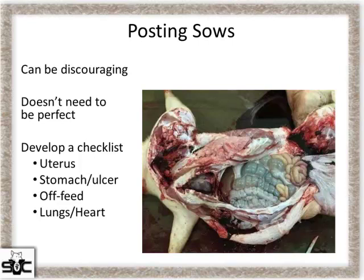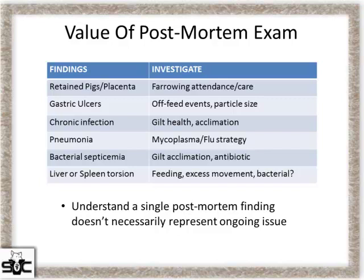Commonly, check the uterus for retained pigs or infection, check for an ulcer if the sow has been off feed, and do a heart and lung check — is there pneumonia or bacterial infection? That's the cause of death. I think it's important because we're really blind unless we start opening up sows and understanding why we're seeing these deaths. When you see retained pigs and placenta, or ulcers, as you start opening up animals and sending pictures to your veterinarians, you start finding commonalities.